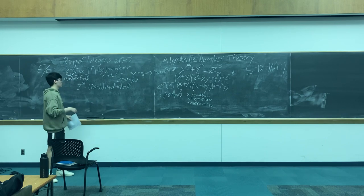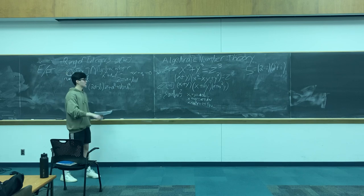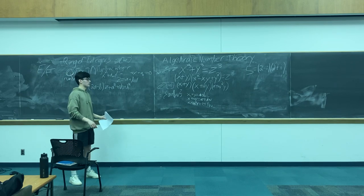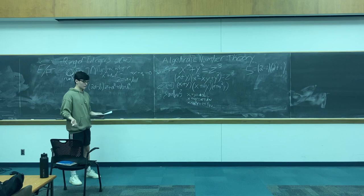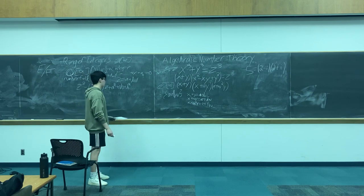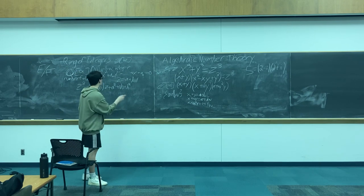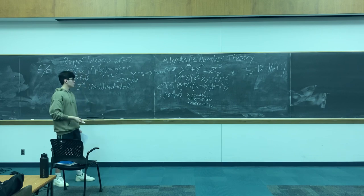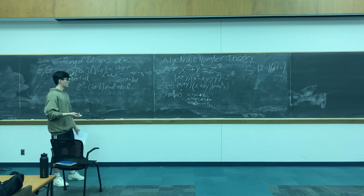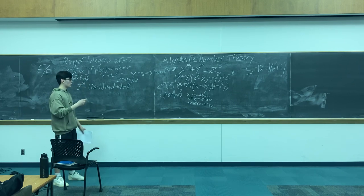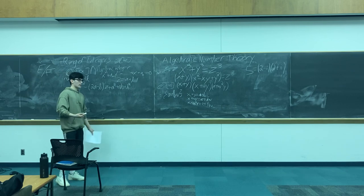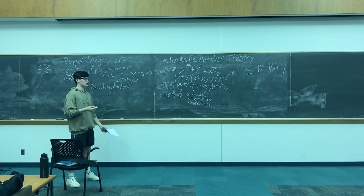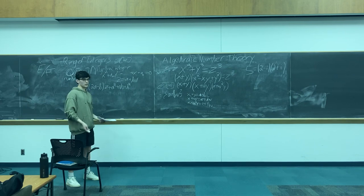Z adjoined ω is a ring of integers. I'll keep reminding you of the definitions so you get clear on it, because the point is to get you familiar with the terms, since we don't assume algebra as a prerequisite. Z adjoined ω is also a ring, an integral domain, a unique factorization domain, and a Euclidean domain — and that's what we're going to get into.